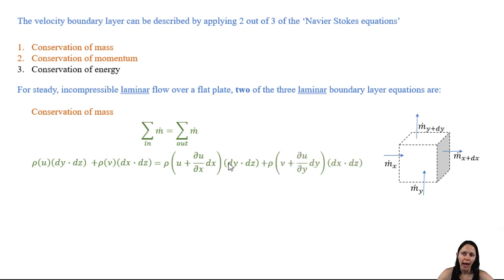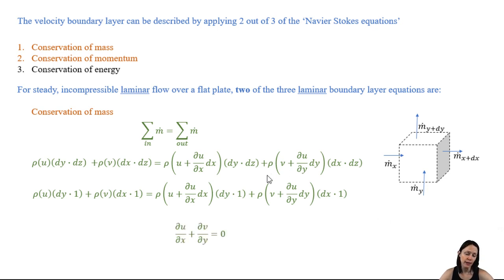Rewatch video 2.3 if you need a refresher on why this is. We also have mass going out at y plus dy. Then we can say that we're only considering velocity in the x and the y-direction, not the z-direction. So for this two-dimensional problem, dz is just one. And dividing through by the density and simplifying, we get this equation.